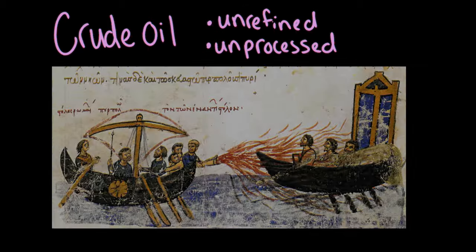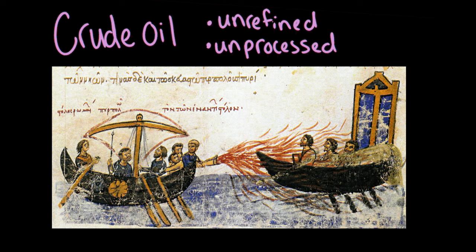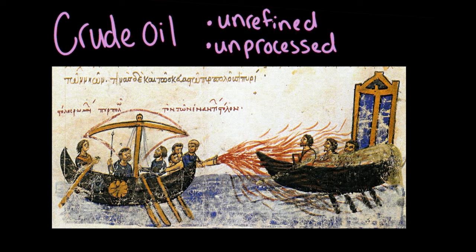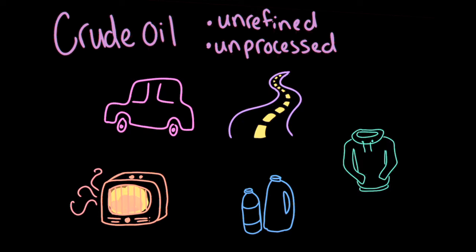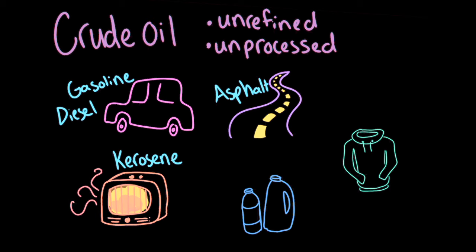Crude oil was probably one of the ingredients in Greek fire, which was a flamethrowing weapon that the Byzantines would fling at their enemies. Today, we refine crude oil into many products, like gasoline and diesel for vehicles, kerosene for heating, and asphalt for road construction. It's also used to make plastics and synthetic fabrics.